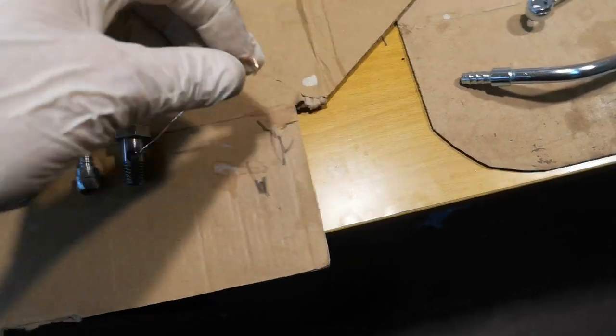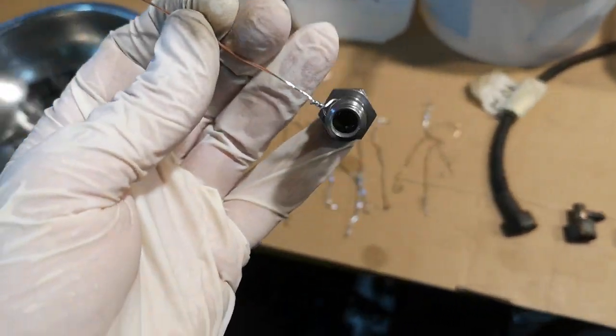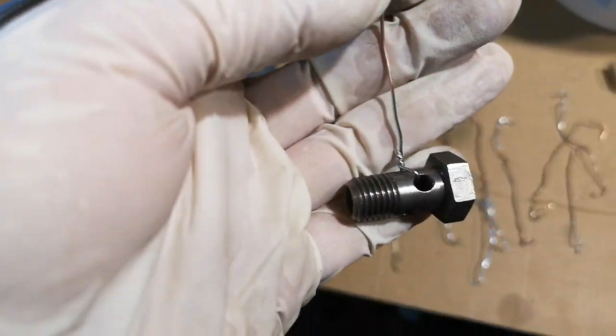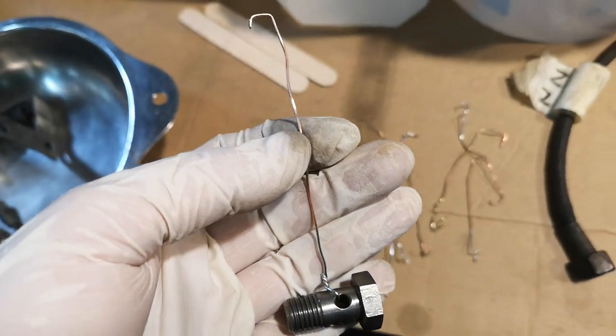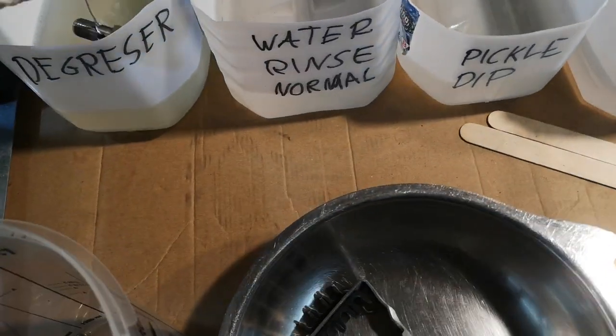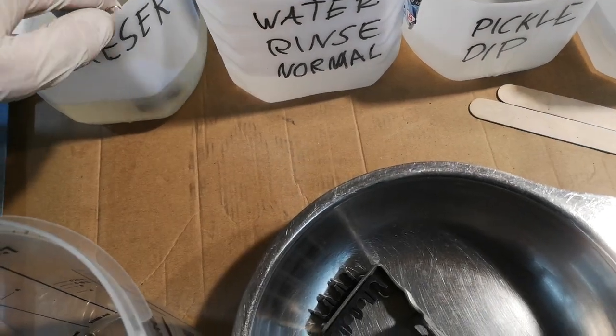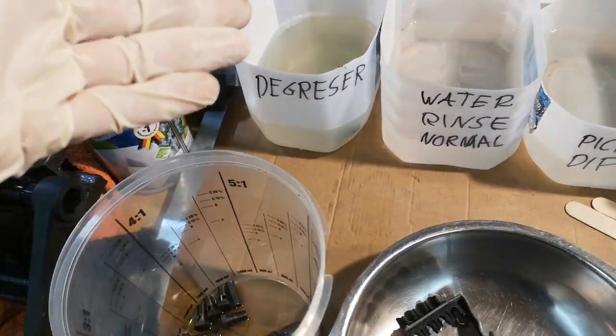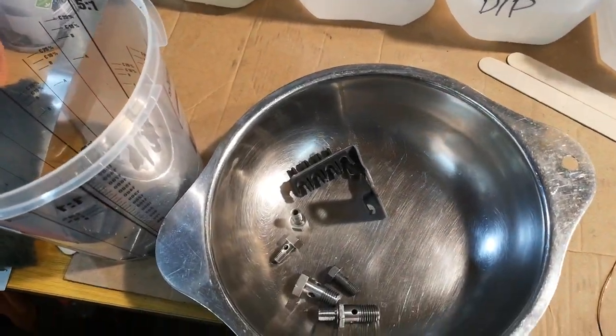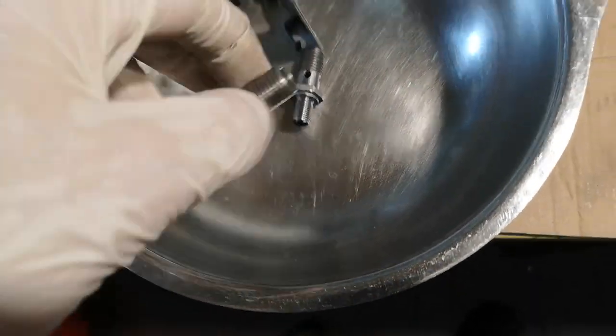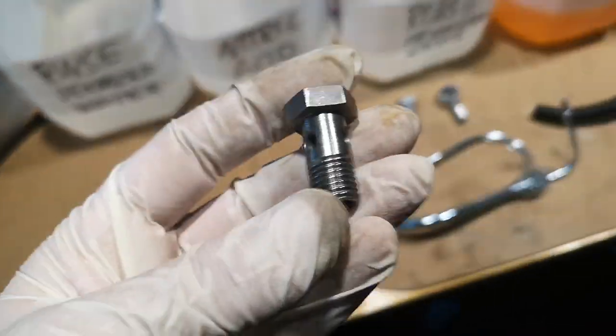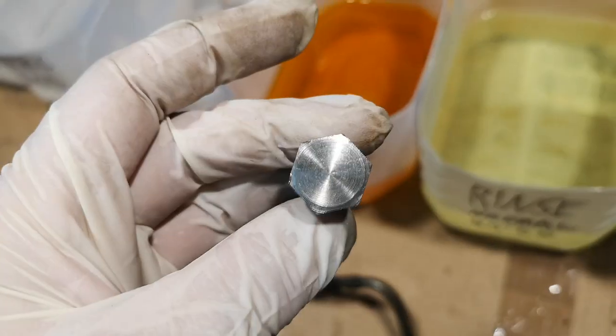I put the piece on a hanger like this. These are the hangers I already used. I use a copper wire which comes with the kit. It's very soft and you can use it multiple times. And as the first step, you put it in the degreaser. You don't have to put it there for too long, especially if you prepared your parts very good.